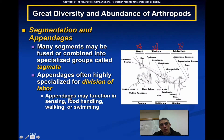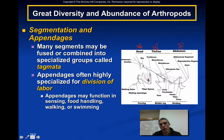Some appendages function in sensing, some in food handling, some in walking, and some in swimming. The appendages attached to the thorax region of the praying mantis are specialized more for grasping behavior. Looking at the head region, mandibles are appendages that crush food. Down in the thorax and abdomen, appendages are used for walking or swimming depending on the type of arthropod.